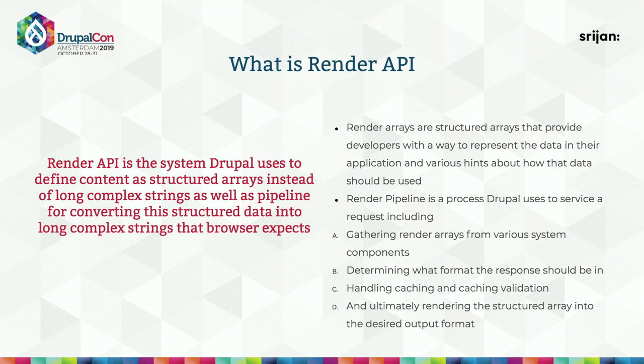Render API provides a mechanism wherein data can be defined as structured arrays and not complex strings. It also defines a mechanism which converts these structured arrays into a format well understood by the browser. Render arrays provide developers a way to represent their data in the application and provide various hints on how to use that data. The render pipeline is the process Drupal uses to service a request — gathering render arrays from various components, determining the output format, handling caching and cache validation, and ultimately rendering the structured array into the desired output.